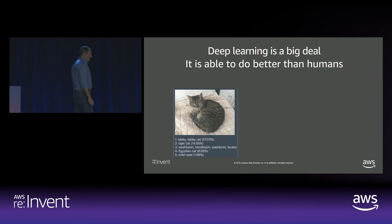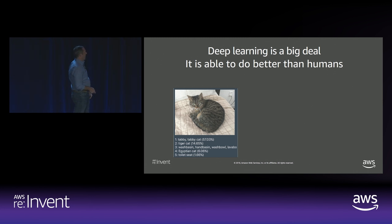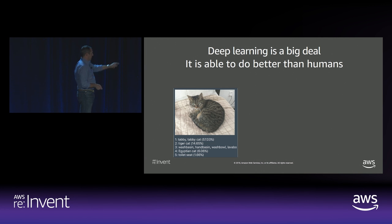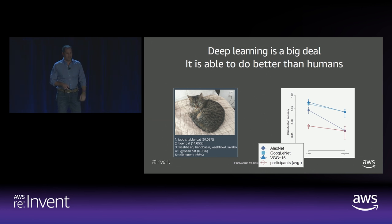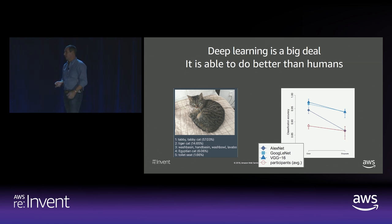Particularly in the area of image classification, machines can actually do better than humans now. Here we have a picture of a cat — the computer correctly identifies it as a tabby cat with 57.3% probability. Clearly it's not a toilet seat at 1.66%. The important thing to note is that AlexNet, GoogLeNet, and VGG16 — those are image classification implementations — are doing significantly better than humans. In the case of computer vision and image classification, it's really a solved problem.